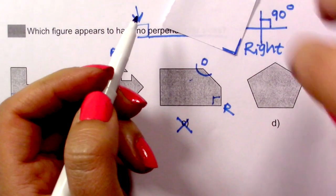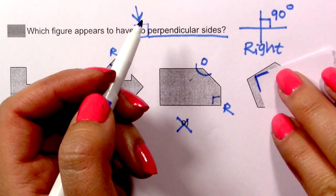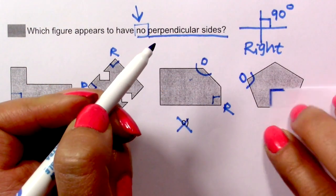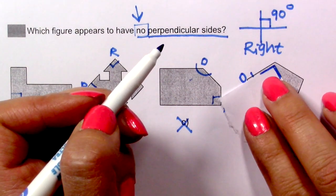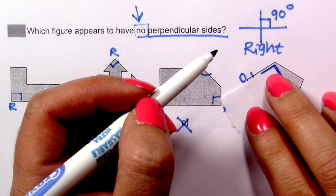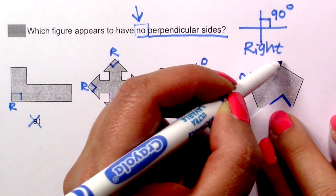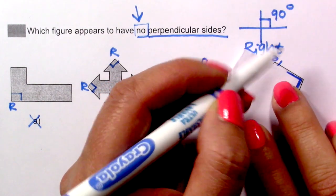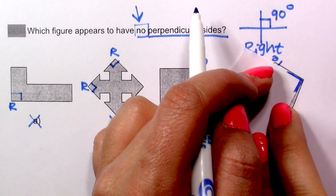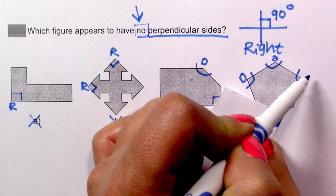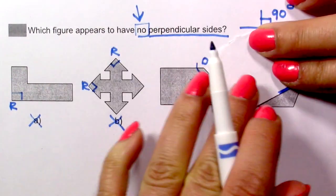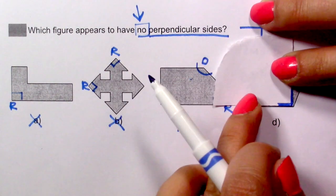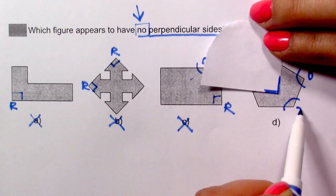Most likely it's D, but let's make sure. The first angle is definitely obtuse because it's more than 90. Rotate the paper, line with line, vertex with vertex — it's greater than 90. Rotate again, line with line, vertex with vertex — definitely greater than 90, another obtuse angle. Rotate, rotate, rotate — line with line, vertex with vertex — definitely an obtuse angle.